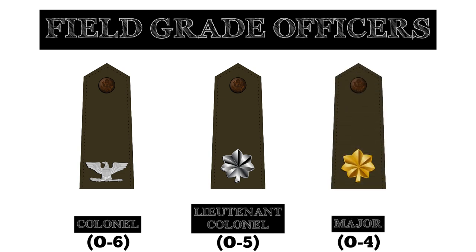Major is the first field officer rank in the United States Army. They usually serve as specialized executive or operations officers for battalion-sized units, but they may also serve as staff officers in high-level command posts. The rank insignia for U.S. Army majors features a golden oak leaf.